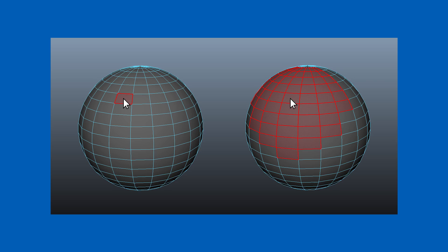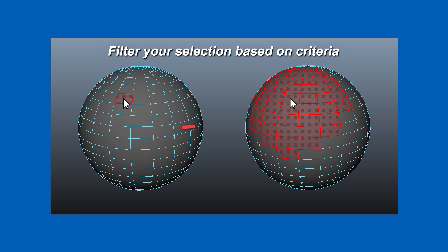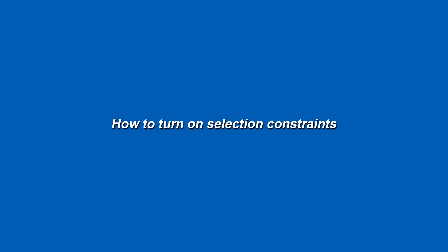Selection constraints are a way to filter your selection in Maya, so when you select something it discards other things based on what you've chosen to filter out. The easiest way to explain this is to just show you, but first here's how you can access selection constraints.